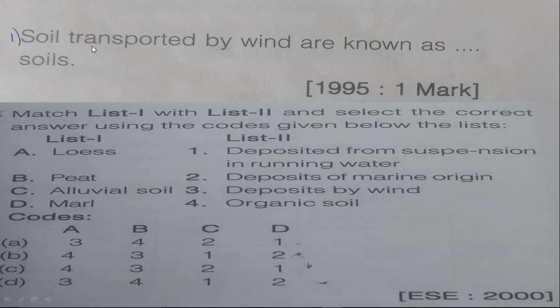So the first question is, soil transported by wind are known as. So in the concept, we said that if the soil is transported by wind, they are called aeolian soils or deposits.